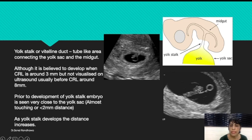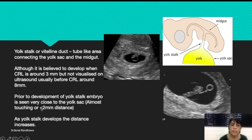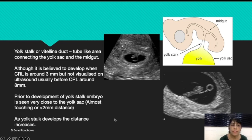If you are seeing cardiac pulsations in such a fetus, that is fine. Even if you are not seeing cardiac pulsations, you are very sure because the CRL is quite big and you can easily say this is missed abortion. Prior to the development of the yolk stalk, the embryo is seen very close to the yolk sac — because till then the yolk stalk has not developed. Some cases may show a little distance but that would be less than 2 mm. As the yolk stalk develops, the distance between the yolk sac and the embryo will go on increasing. The yolk stalk may or may not be visible, but this increasing distance is the basis of the yolk stalk sign.